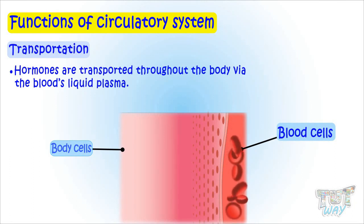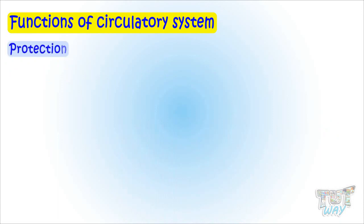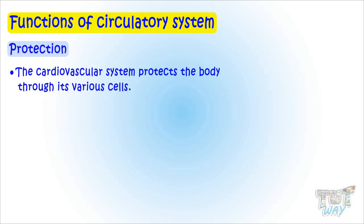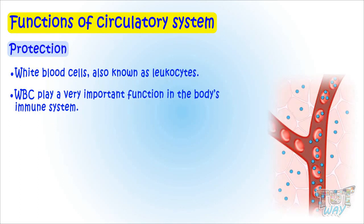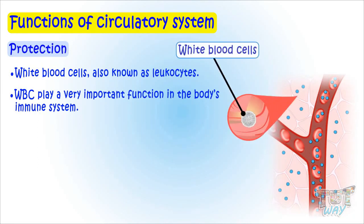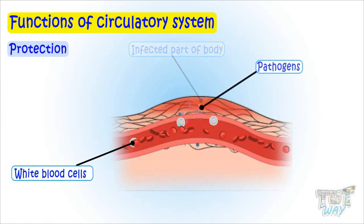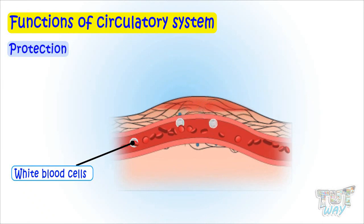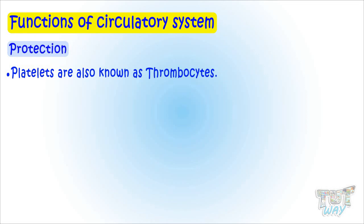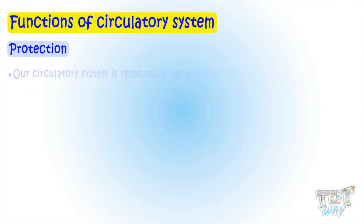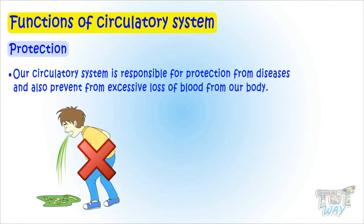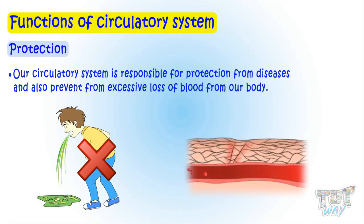The next important function of the circulatory system is protection. It protects the body through its various cells. White blood cells, also known as leukocytes, play a very important role in the body's immune system — they fight off viral infections, produce antibodies against infections, and engulf and ingest pathogens and dead cells from wounds. Platelets, also known as thrombocytes, are responsible for clotting of the blood and the formation of scabs on wounds to stop bleeding. So our circulatory system is responsible for protection from diseases and also prevents excessive loss of blood.